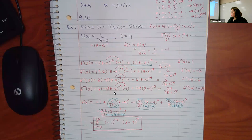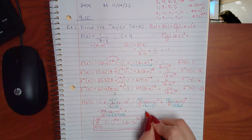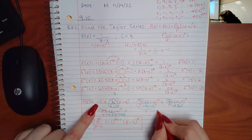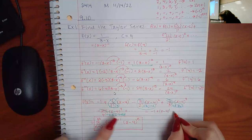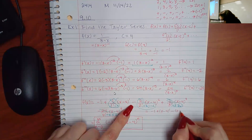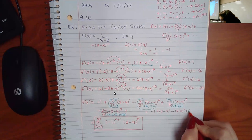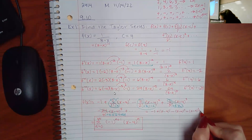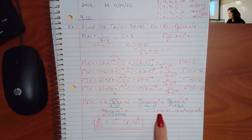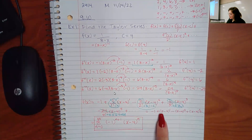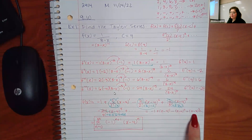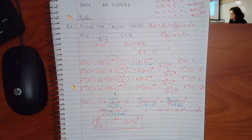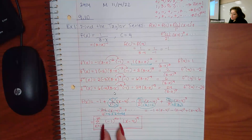To summarize what we see: the signs go negative, plus, negative, plus, and the only thing happening is you have (x−4) to the first power, second power, third power, and so on. So the power of n represents the x part, and the (−1)^(n+1) represents the changing sign.